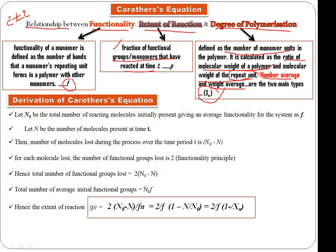These are the three terms. Now let's move to the derivation. Let's say we have a reaction vessel with some monomer from which we have to make polymer.